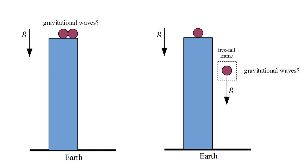So, a free-fall observer might conclude that the falling ball emits no gravitational waves, while the ball on the roof does. These inconsistent conclusions seem to cast doubt on the possibility of gravitational wave radiation.